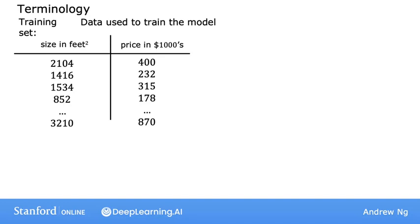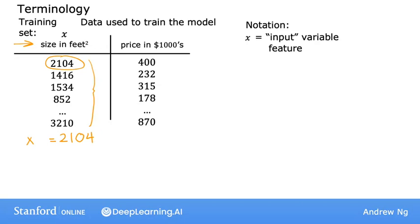In machine learning, the standard notation to denote the input is lowercase x. We call this the input variable, also called a feature or input feature. For example, for the first house in your training set, x is the size of the house, so x equals 2104.